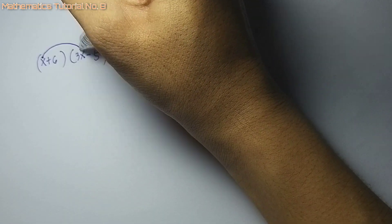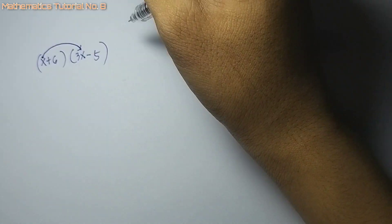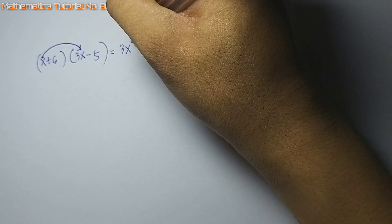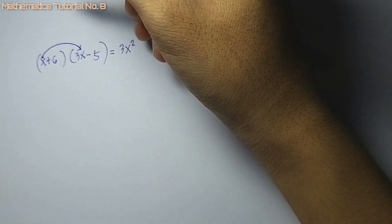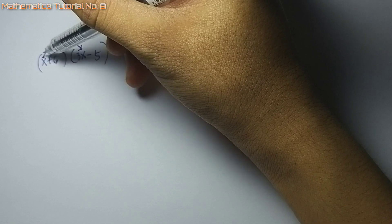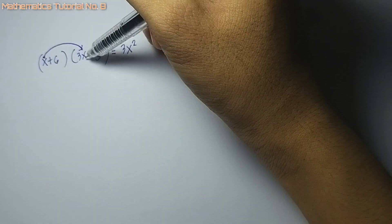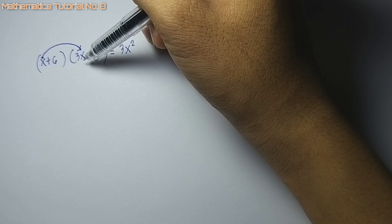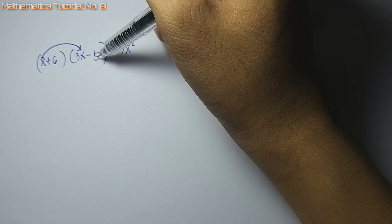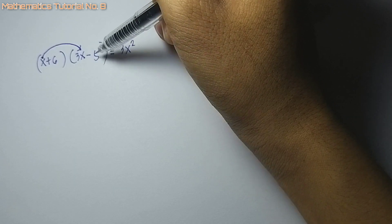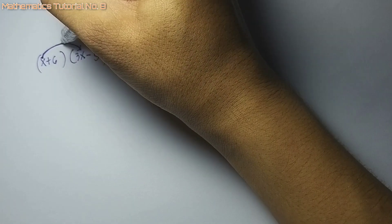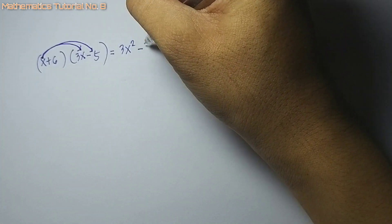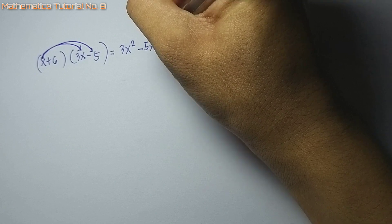So x times 3x, that is 3x squared. Naka-multiply na ta dito, pero ang giingon sa rule kay i-multiply sa tanan terms, so i-multiply pa: x times negative 5, and that is negative 5x.